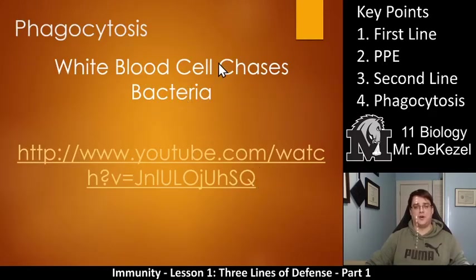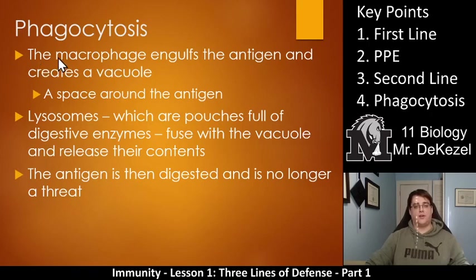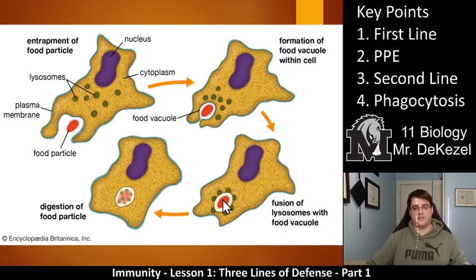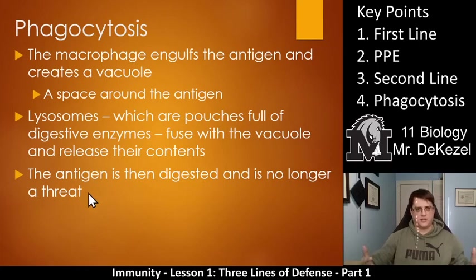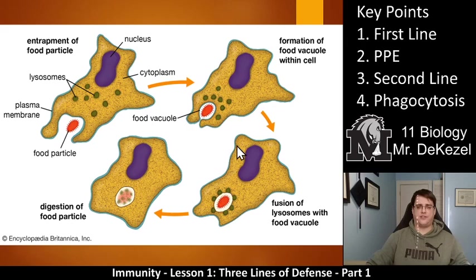Take a look at this video — a white blood cell actually chases a bacteria around a petri dish; you can see it moving and chasing as it detects the bacterium. In more detail: the macrophage engulfs the antigen and creates a vacuole, which is a space around the antigen. Lysosomes — little pouches full of digestive enzymes — then fuse with the vacuole, release their contents, and digest the antigen. That is what does the actual digesting in phagocytosis. The antigen is digested and is no longer a threat, and the macrophage may then repeat the cycle.